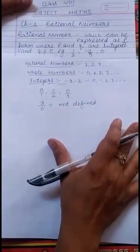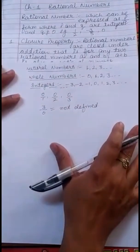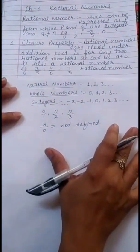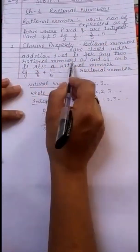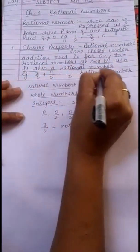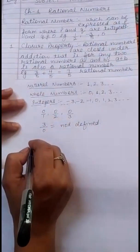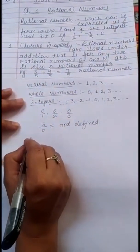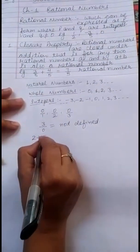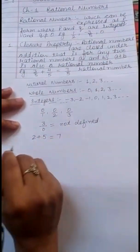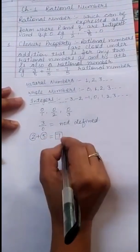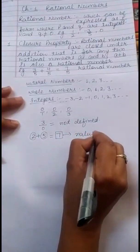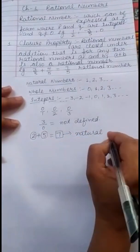Now, the next is about properties. The very first property is Closure Property. Closure Property for rational numbers states that for any two rational numbers A and B, A plus B is also a rational number. For natural numbers: 2 plus 5 equals 7. Since 2 and 5 are both natural numbers, their sum 7 is also a natural number.